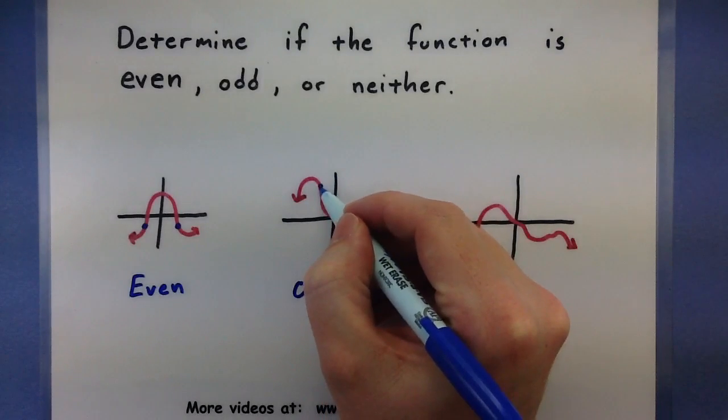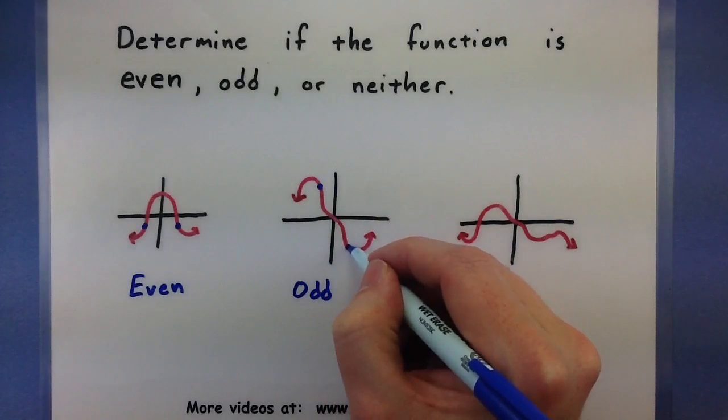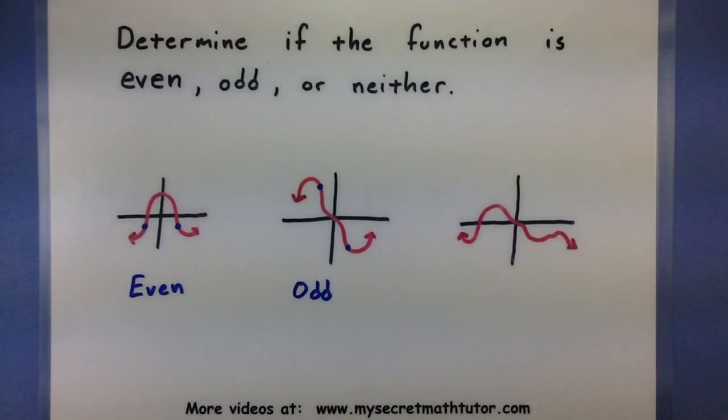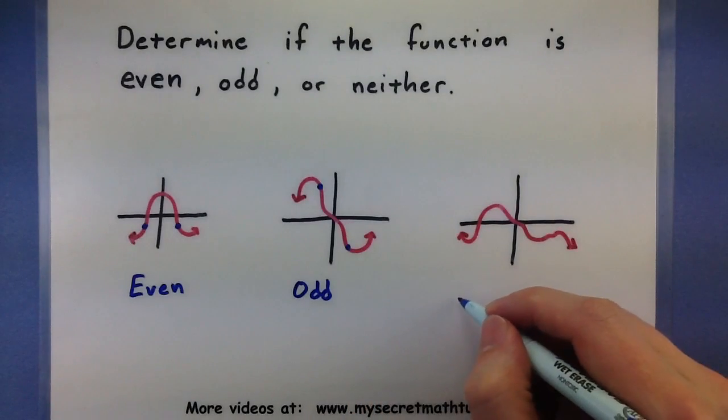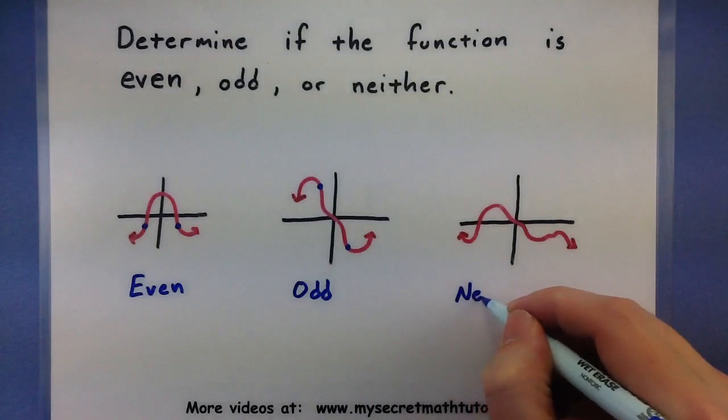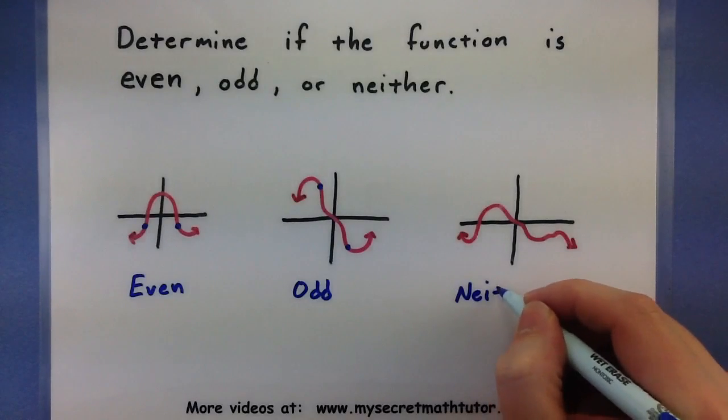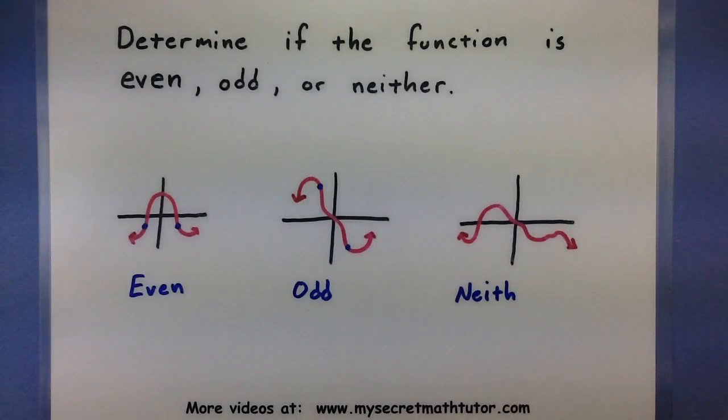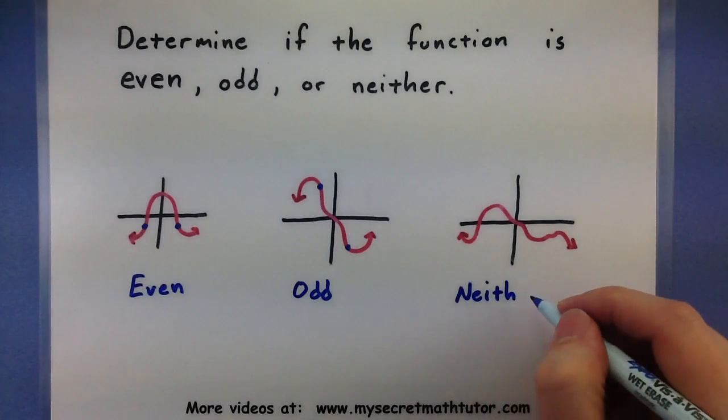So again, for every point on maybe one portion of the graph, there's like a corresponding one on the other side. And neither, well, that's neither one of these cases. So it might have symmetry, but it is not y-axis symmetry, and it is not origin symmetry.